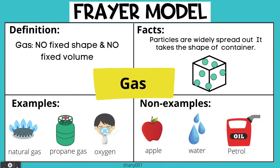Gas. Definition: no fixed shape and no fixed volume. Facts: particles are widely spread out; it takes the shape of its container. Examples: natural gas, propane gas, oxygen. Non-examples: apple, water, petroleum oil.